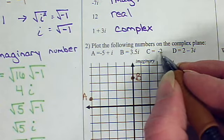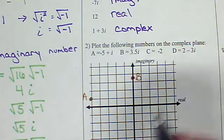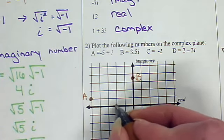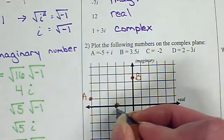c equals negative 2. That is just a real number. So it's just on the real number line. Well, we know where negative 2 is on the number line.